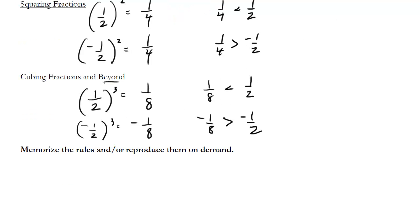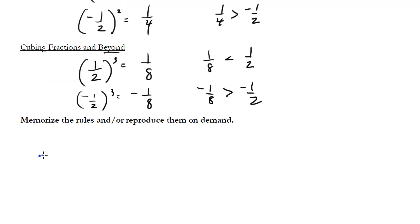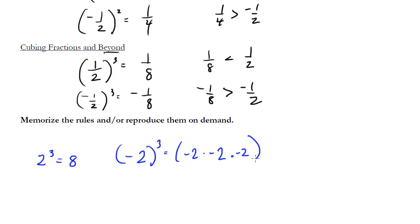One thing I should add before I finish the video is what happens when you cube integers. Obviously, if I cube 2, I'm just going to get 2 times 2 times 2, and that's the same thing as 8. What happens if I cube negative 2? Well, that's the same thing as negative 2 times negative 2 times negative 2. Notice here we get 8 but it's negative, because the two negatives cancel each other but then we're left with one negative.